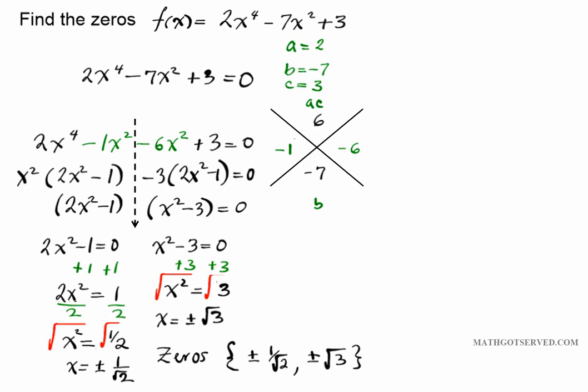So these are the last two zeros for my polynomial function. We have four zeros in this problem. So our zeros are plus or minus 1 over root 2 and plus or minus root 3.